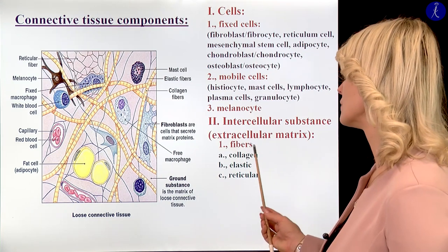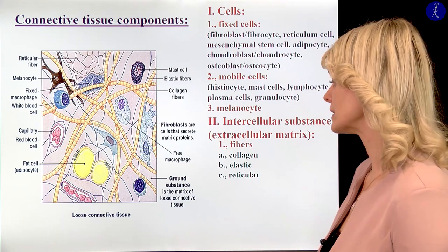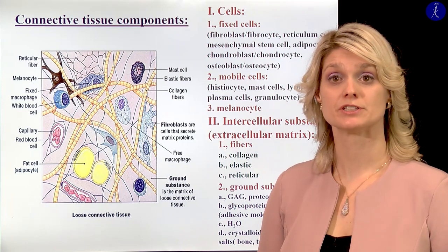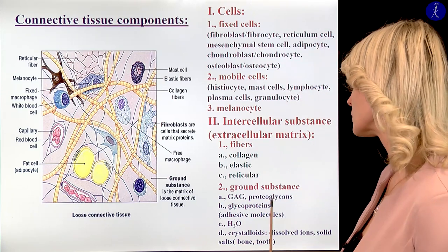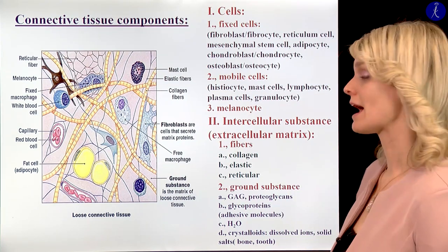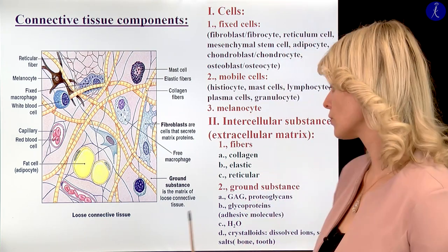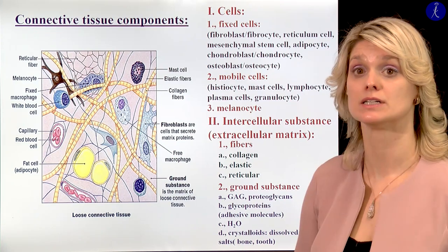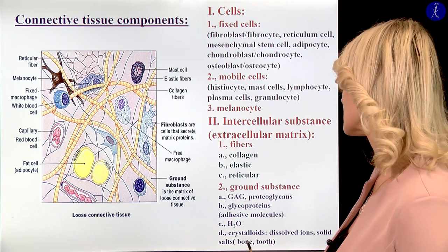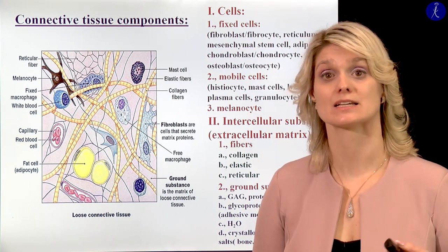I showed you the collagen fiber, elastic fiber, and reticular fibers. I also demonstrated the ground substance of the connective tissue, which consists of glycosaminoglycans, proteoglycans, and different adhesive molecules. In some cases we have a lot of water inside, for example in blood. And of course we can find inorganic materials too within the ground substance. This is a special characteristic of the bones and teeth, and you will have a separated lecture about these structures.